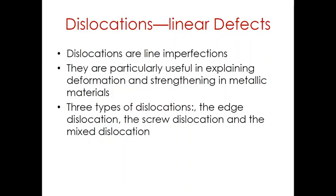Welcome. In the previous session we discussed point defects and impurities. In today's session we will discuss more about dislocations, that is linear defects. Dislocations are line imperfections in an otherwise perfect crystal. They are introduced typically during solidification of the material or when material is permanently deformed. Although dislocations are present in all materials including ceramics and polymers, they are particularly useful in explaining deformation and strengthening in metallic materials.